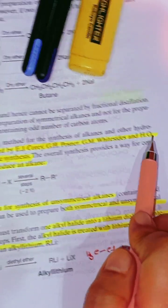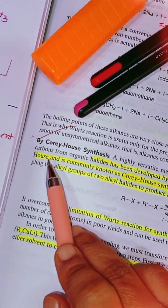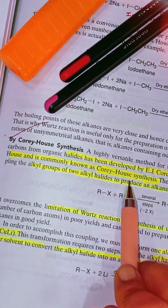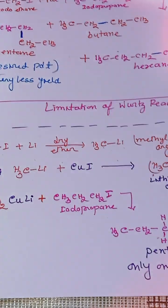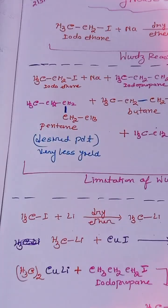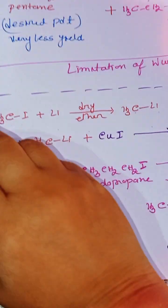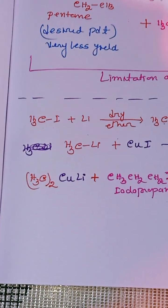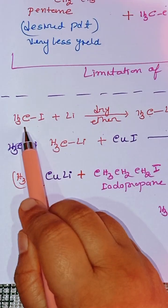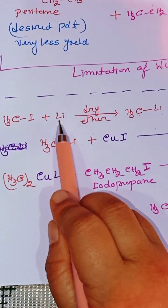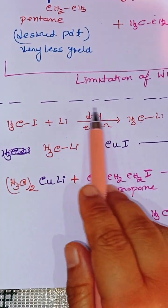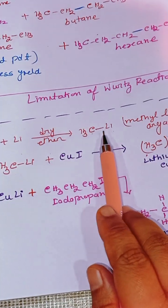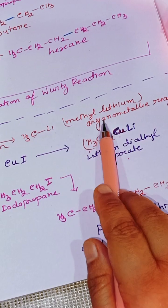Now let's explain the Corey-House reaction. It is a multi-step synthesis. Here we have taken methyl iodide. When methyl iodide reacts with lithium in dry ether as a solvent, we get methyl lithium, which is an organometallic reagent.